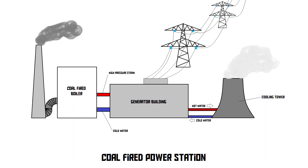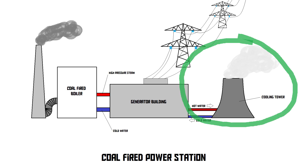In a cooling tower-based system, we're cooling down water. The cooling tower cools the water, the water then goes into the thing that needs to be cooled — the power station, for example. It absorbs the heat from that power station, then the hot water goes back into the cooling tower, which cools it back down, and the cold water goes back into the facility.